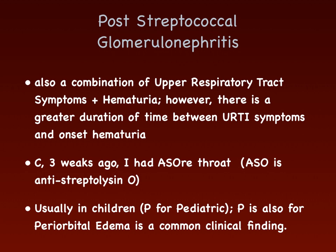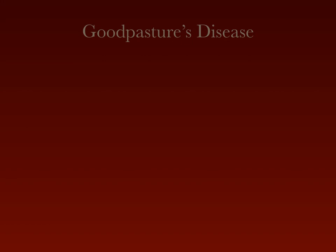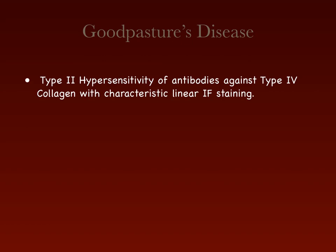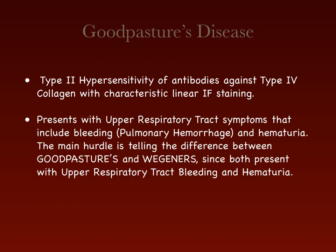Goodpasture's disease, now called anti-GBM disease, involves a type II hypersensitivity with antibodies against type IV collagen, producing characteristic linear immunofluorescent staining in the glomerular basement membrane. The key clinical presentation is hemoptysis and hematuria — the hemoptysis is due to pulmonary hemorrhage.